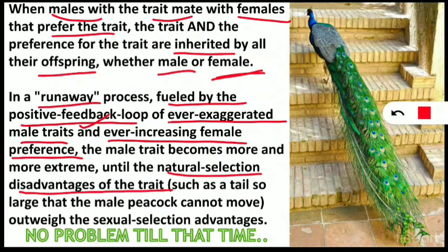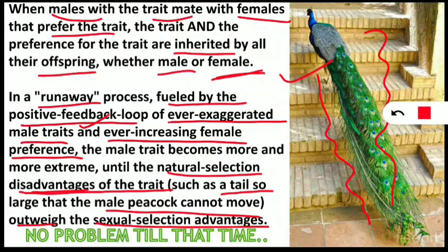This positive feedback loop continues until the natural selection disadvantages of the trait begin to outweigh the sexual selection advantages. For example, a peacock's tail growing larger and larger across generations eventually becomes difficult for the peacock to move with — it outweighs the sexual selection advantage. The male peacock is now in danger due to its oversized tail, which is when we say the process is 'out of control' — when the display exceeds the required amount and becomes harmful to the organism.